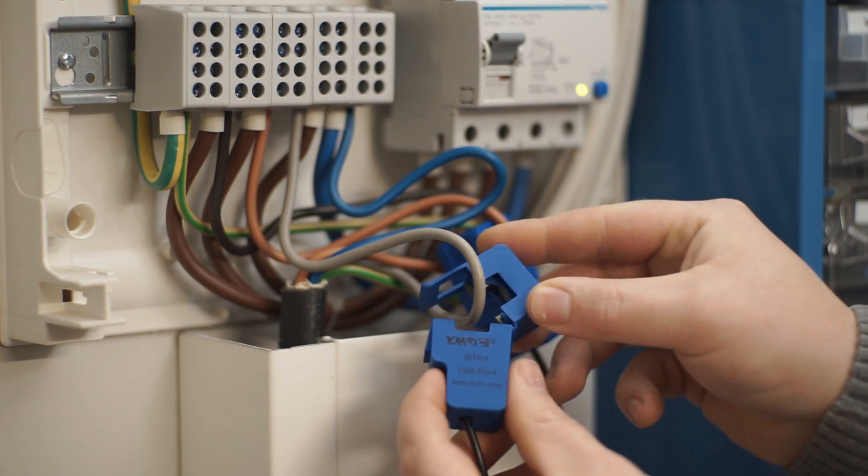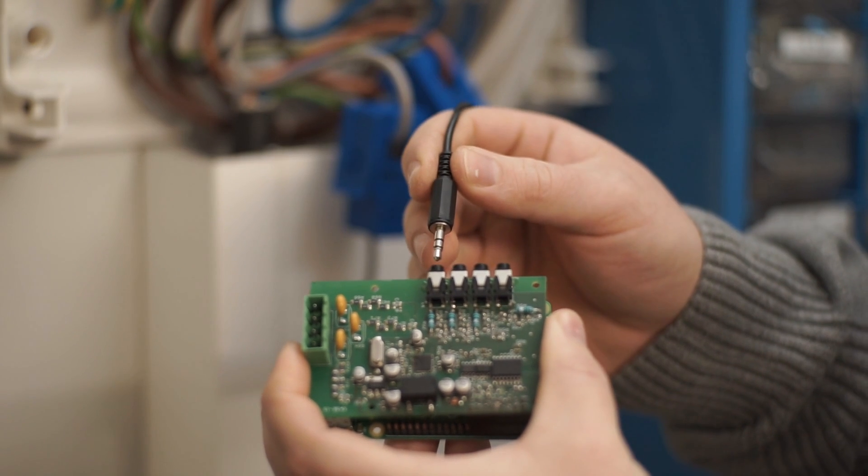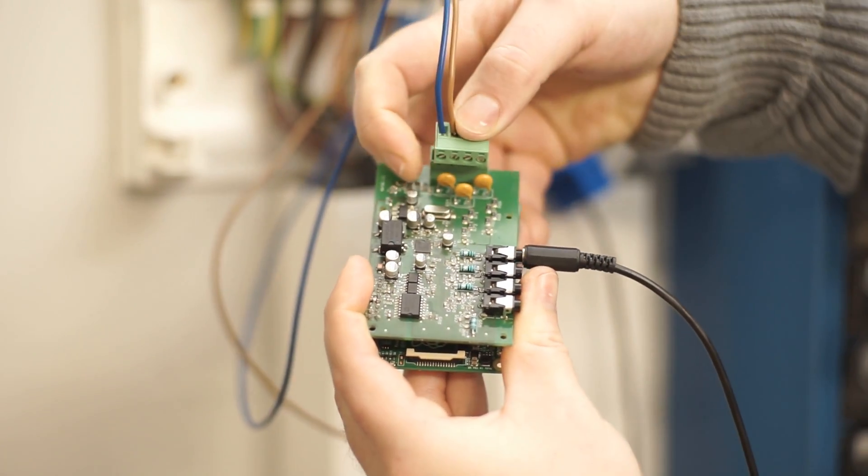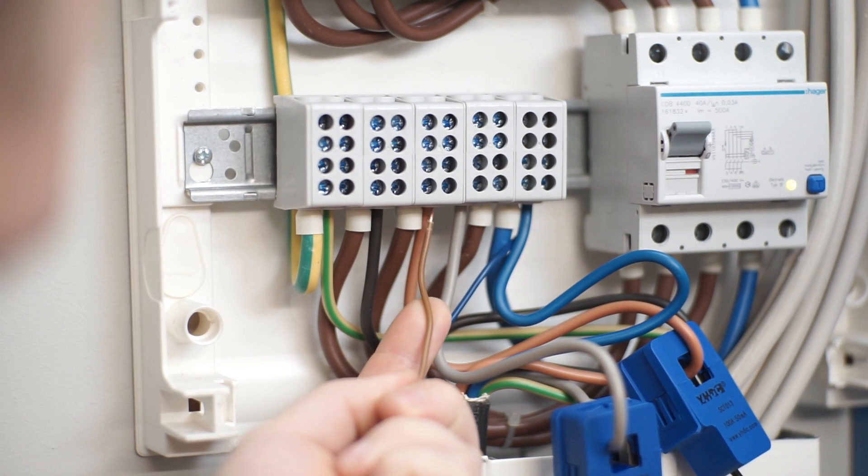With the help of one to three inductive split-core current transformers that are connected via jacks, it is possible to measure currents up to 100 Ampere and more at all three phases and neutral conductor in a contactless manner.